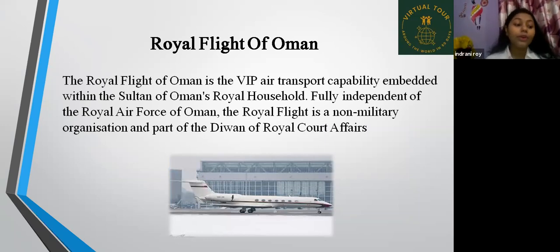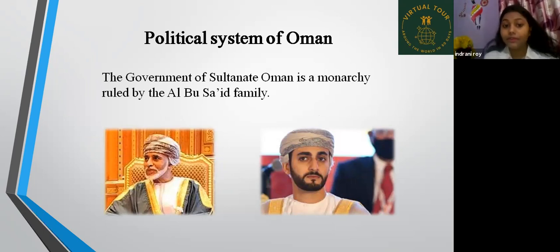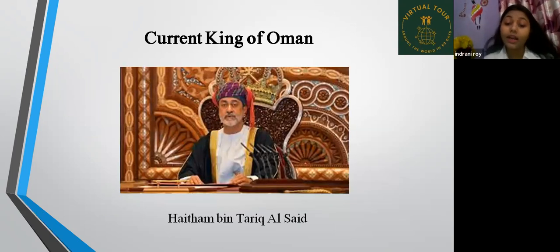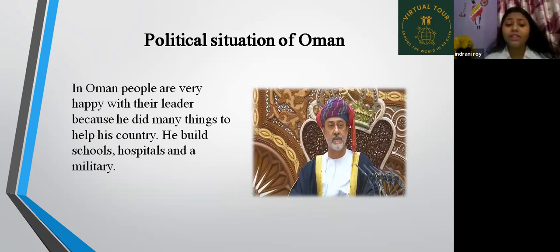The Diwan of Royal Court is a government office located in Muscat, Oman. The political system of Oman: the government of the Sultanate of Oman is a monarchy ruled by the Al-Bu Said family. The current king of Oman is Haitham bin Tariq Al Said. In Oman, people are very happy with their leaders because he did many things to help his country — he built schools, hospitals, and a military, and did many good things for the people.